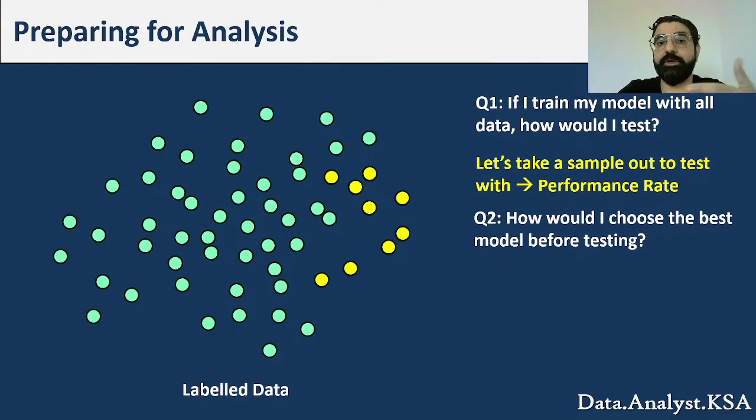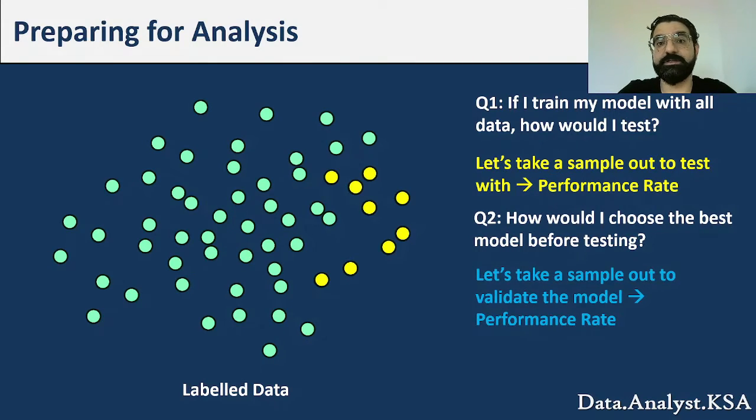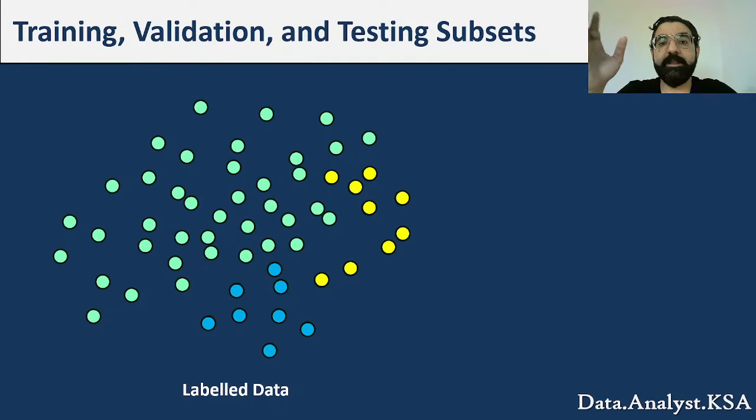So the second logical idea is let me take another subset that I can use to tune the model. And these are our training, validation, and testing subsets.